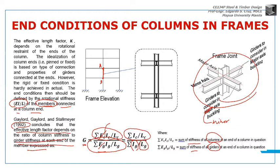When the column is oriented this way and the girder is here, the direction of buckling for the column is y-axis. So you'll use Iy.